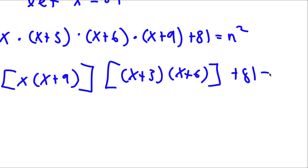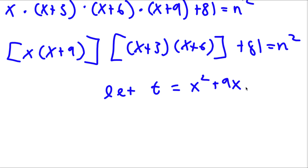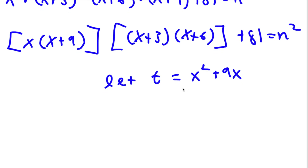Now I'm going to let t equal x² + 9x. As you see, we have x times (x + 9). So if I multiply those two together, I get x² + 9x.